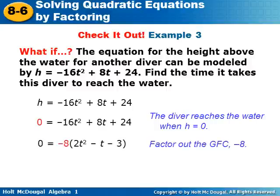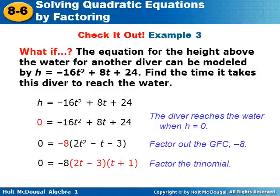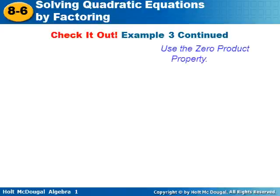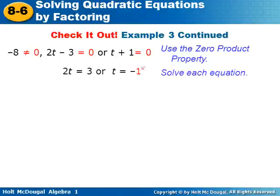We factor out the greatest common factor of negative eight, leaving 2t² minus t minus 3 inside the parentheses. We factor that trinomial using the X-box or chart method and get zero equals negative 8 times (2t minus 3) times (t plus 1). Applying the zero product property, negative eight cannot equal zero, so we set 2t minus 3 equals zero or t plus 1 equals zero, and solve for both.